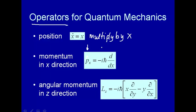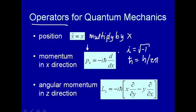minus i h-bar, first derivative with respect to x. Here, i is the square root of minus 1, and h-bar is Planck's constant divided by 2π. So you just take the first derivative of whatever function you're operating on with respect to x, and that gives you the x component of momentum.